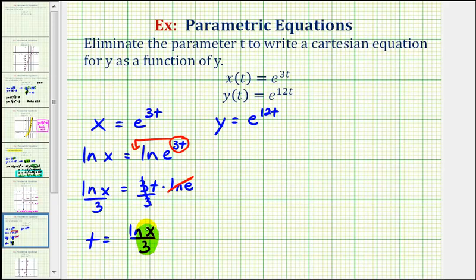We can replace t with natural log x divided by three. So we'll have y equals e raised to the power of 12 times natural log x divided by three.